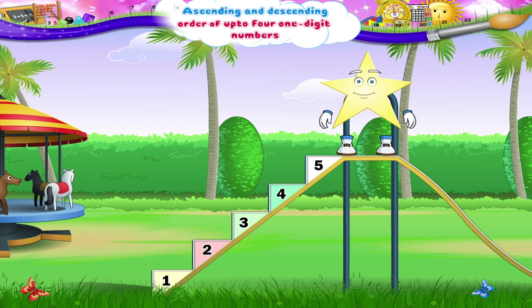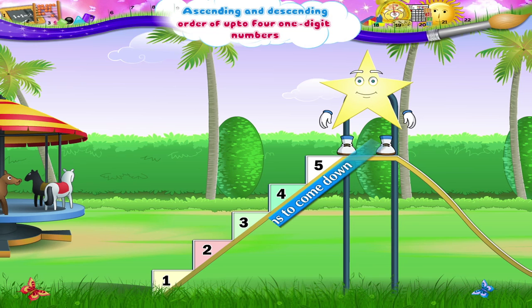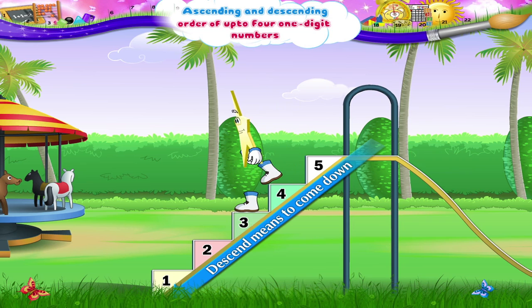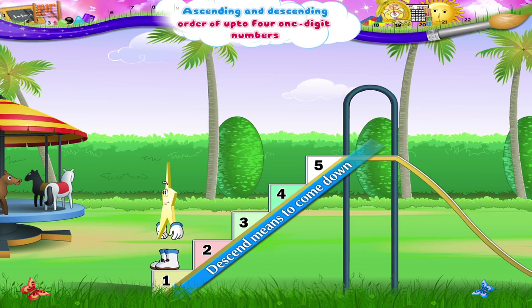Now, Starry, if you do get scared and you don't want to use the slide, you can come down the steps again. You can descend. But be careful — you need to come down or descend one step at a time. Like this: five, four, three, two, one. And you are on the ground again.